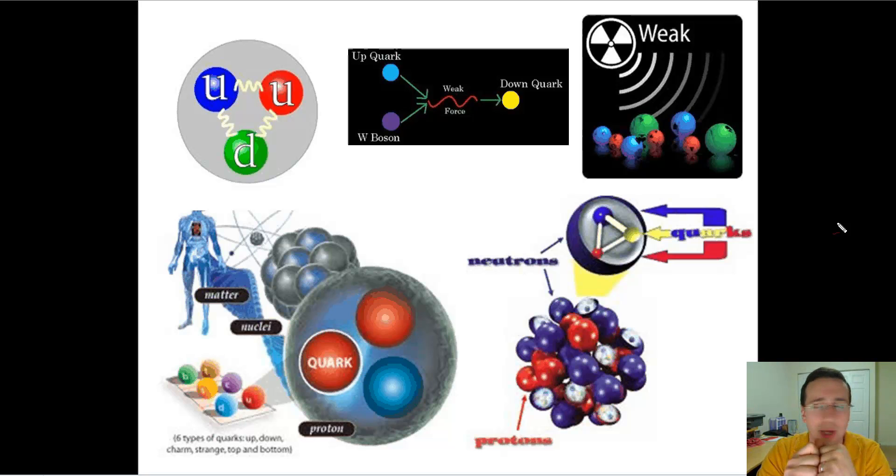Because remember, each proton is made of two up quarks and one down quark, and each neutron is made of two down quarks and one up quark. What the weak force will do is it will interact with those quarks and change them. And you see that on the top picture here in the middle. For example, if an up quark is hit by a W boson, it would actually interact and change it into a down quark.